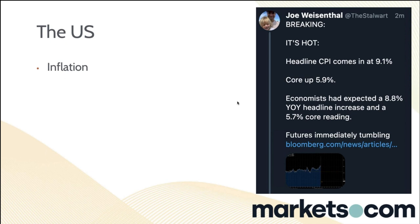At some point inflation comes down, because the best thing to kill inflation is inflation itself. Take oil: if it's double what it was a year ago, that's now in the price. For inflation to stay at these levels, oil needs to double again. Brent going to 200? Certainly the headline 9.1% was a shocker number. The core at 5.9% was an even bigger shocker.